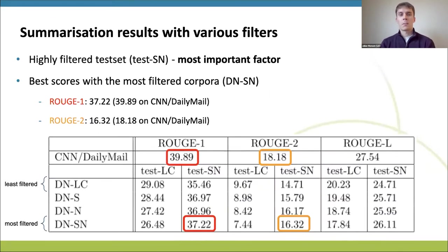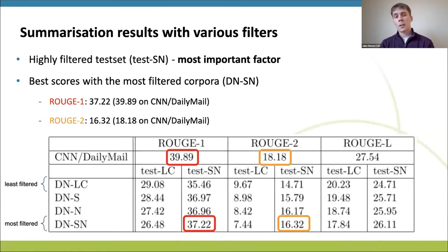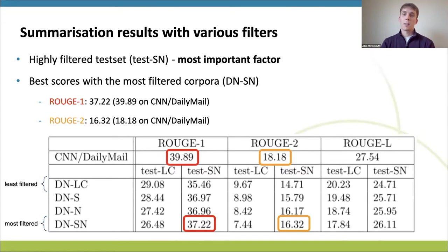The most important factor in achieving high evaluation scores was to have a highly filtered test set. The highest evaluation scores were achieved when training on a relatively small but highly filtered corpus. This highlights the importance of having high quality test data during evaluation, and that more training data does not necessarily produce a better model if the data is of lower quality. On the other hand, the model fine-tuned on the less filtered corpus performed better on the less filtered test data, because it can generalize results better to many kinds of examples, even those of lower quality.